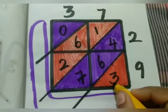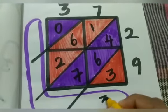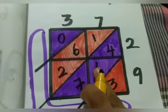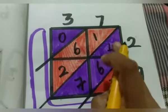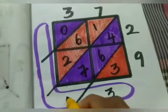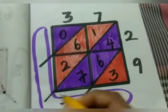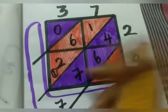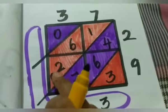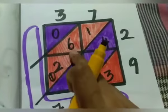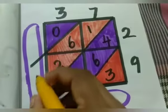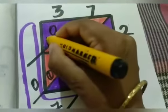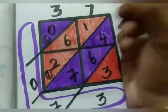We got 3. Next, 7 plus 6 is 13; 13 plus 4 is 17. So, 7 is here and 1 is carried over to the next place. Then 2 plus 1 is 3; 3 plus 6 is 9; 9 plus 1 is 10. So, 0 is here and 1 is carried over to the next place.